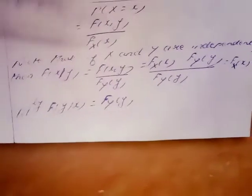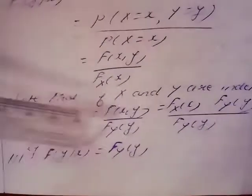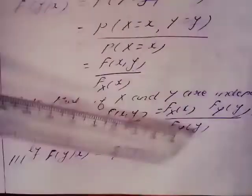Note that if X and Y are independent, f(x|y) = f(x,y) / f_Y(y) = f_X(x) · f_Y(y) / f_Y(y) = f_X(x). Similarly, f(y|x) = f_Y(y).